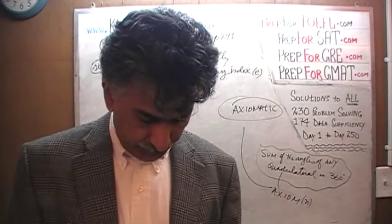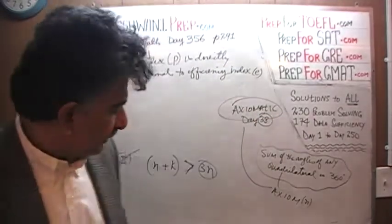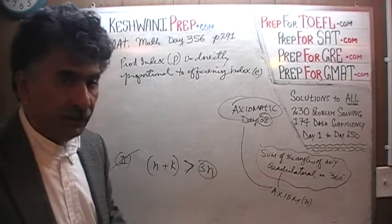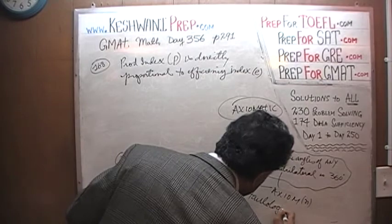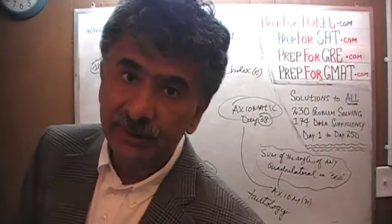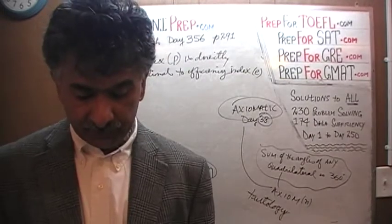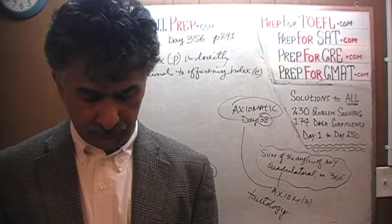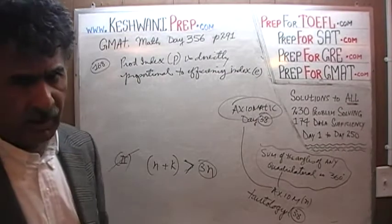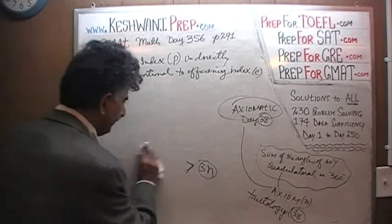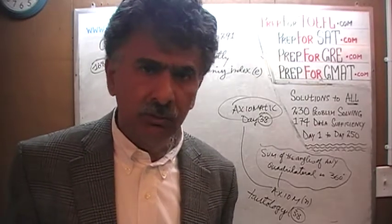A synonym of axiom is tautology — something true by definition that does not need to be proven. We covered axiomatic and tautology on vocabulary day number 38. If you want to improve your GMAT vocabulary, type in 'GMAT vocabulary words day number 38.' It does not hurt to work on vocabulary, even in a math session.